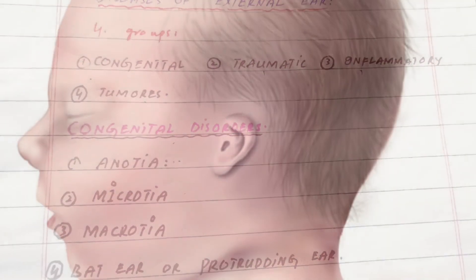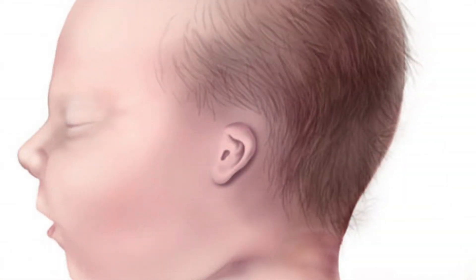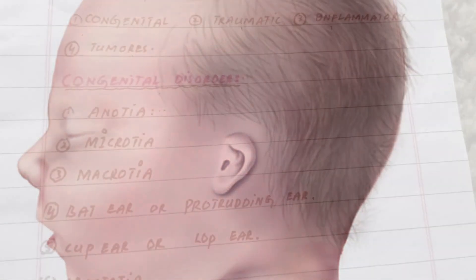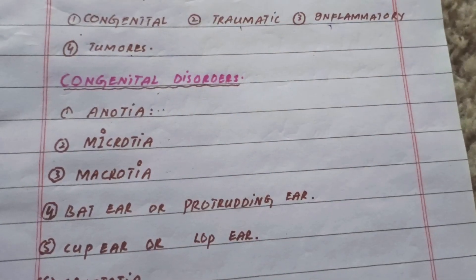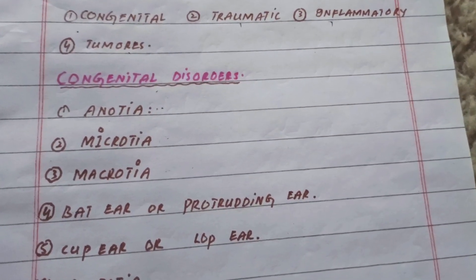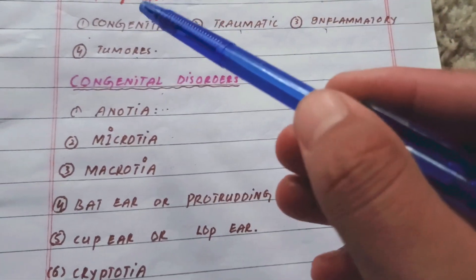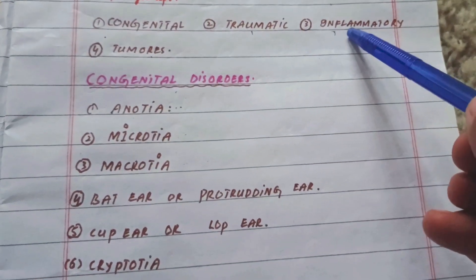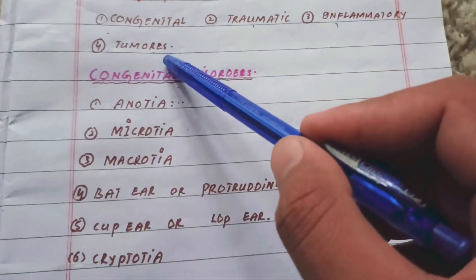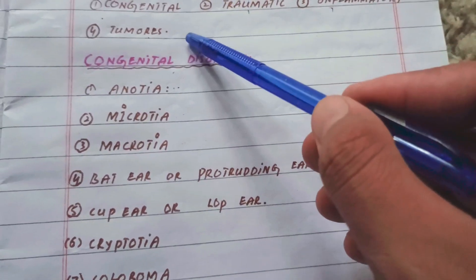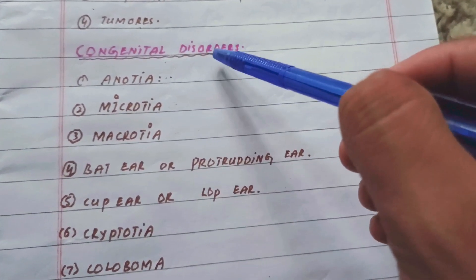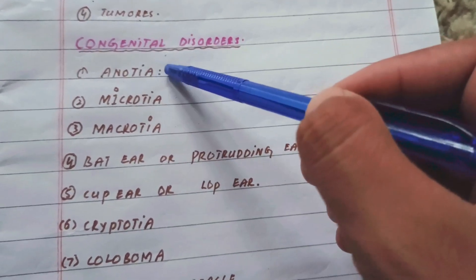Assalamu alaikum everyone, welcome to my channel Medical Lectures and Mnemonics. Today I'm going to talk about the diseases of the external ear. In the previous video I have already talked about the anatomy of the external ear — you can find the link in the description. The diseases of the external ear can be categorized into four: congenital, traumatic, inflammatory, and tumors or neoplastic conditions. In this video I'm going to talk about the congenital disorders.